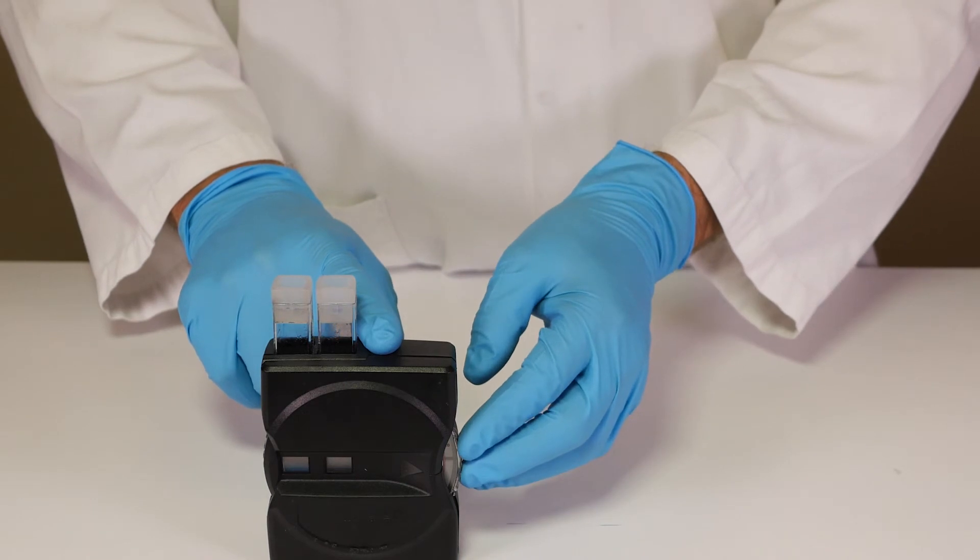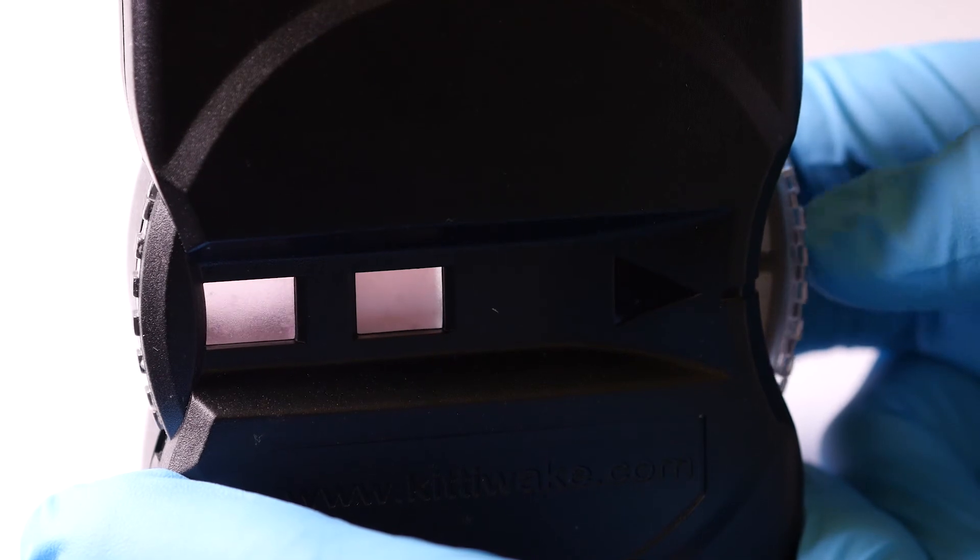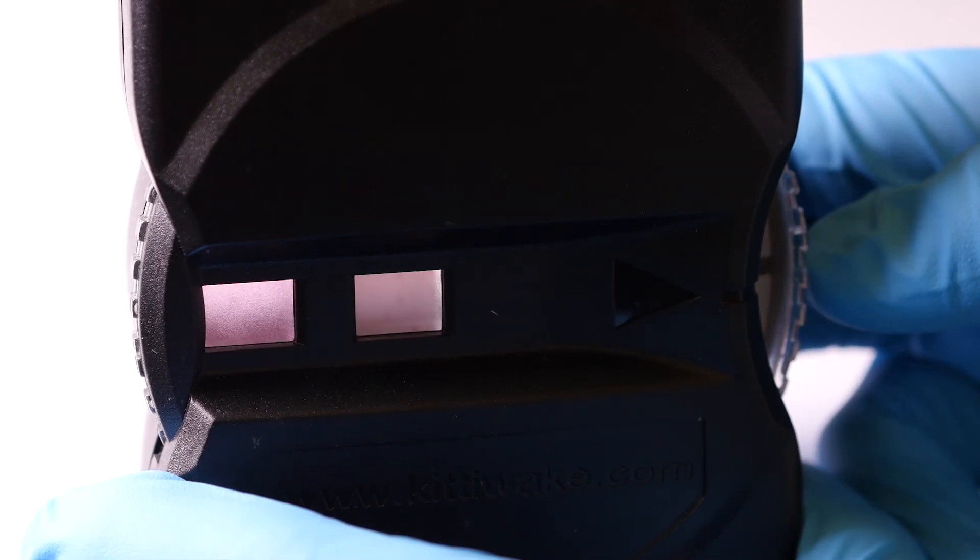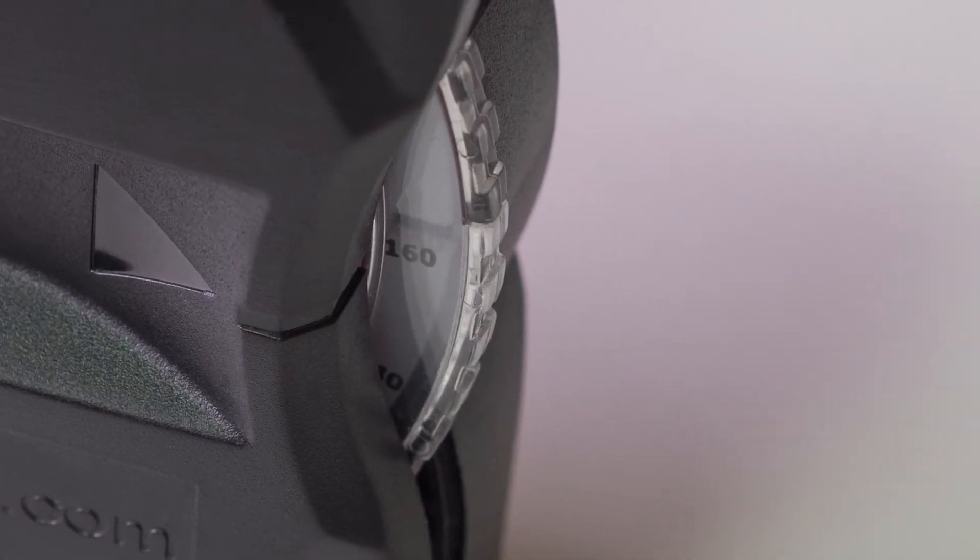Rotate the colour wheel clockwise until the colour of the outer window matches that of the inner. Read the concentration figure in ppm directly from the wheel.